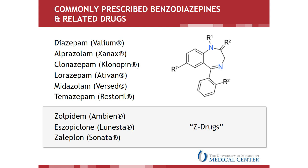Benzodiazepines are among the most widely prescribed psychiatric drugs in the United States and in the world, with more than 1 in 20 people filling a benzodiazepine prescription each year in the United States alone. The most commonly prescribed benzodiazepines and benzodiazepine-type drugs include diazepam or Valium, alprazolam or Xanax, and clonazepam or Klonopin. Although these drugs can be prescribed for several different conditions, anxiety and sleep disorders account for the majority of benzodiazepine prescriptions. The benzodiazepine-type drugs called Z-drugs, including zolpidem or Ambien, are among the most largely prescribed sleep aids.